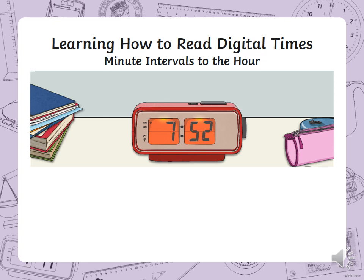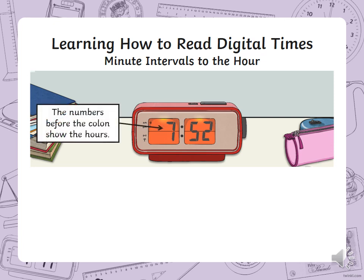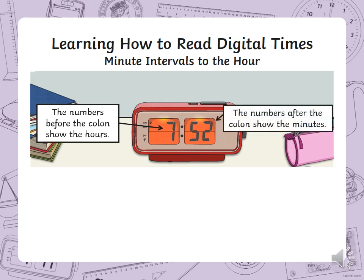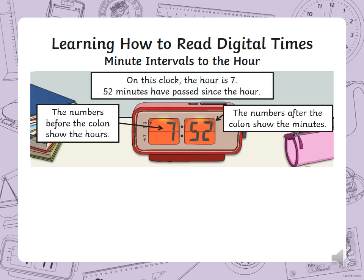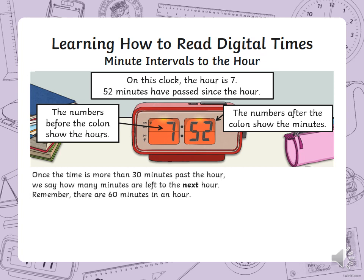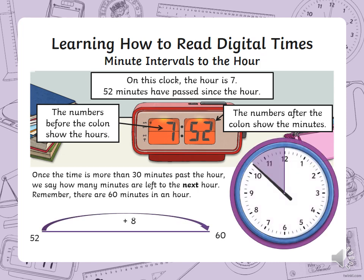Have a look at this clock. The numbers before the colon show the hours and the numbers after the colon show the minutes, just like we said at the beginning. On this clock, the hour is 7 and 52 minutes have passed since the hour. Once the time is more than 30 minutes past the hour, we say how many minutes are left to the next hour. Remember, there are 60 minutes in an hour. So 52 plus 8 gives us 60 — the time is 8 minutes to 8.